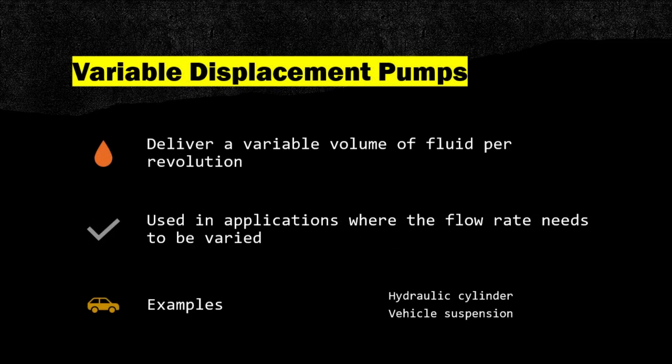Variable displacement pumps deliver a variable volume of fluid per revolution, and are used in applications where the flow rate needs to be varied. Examples include hydraulic cylinders and vehicle suspension systems.